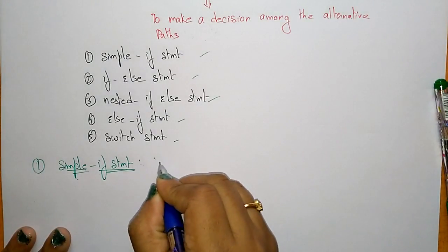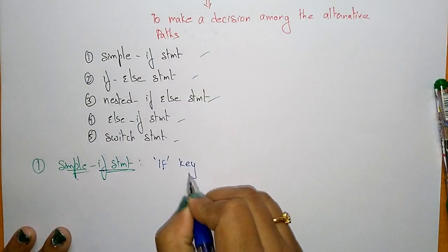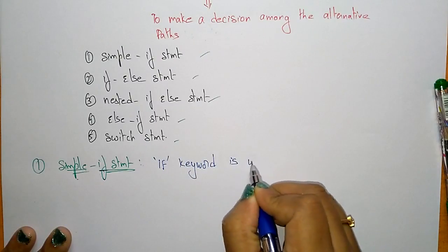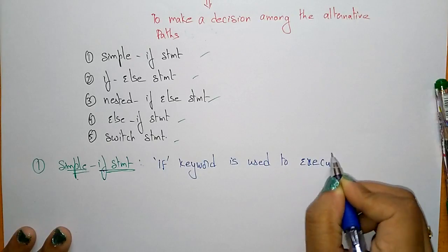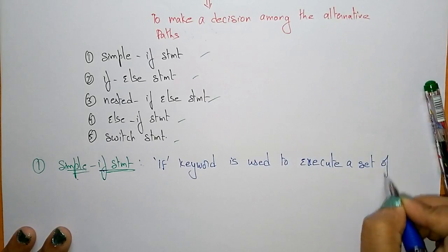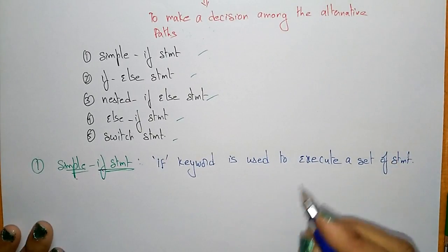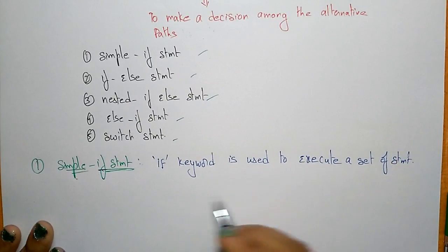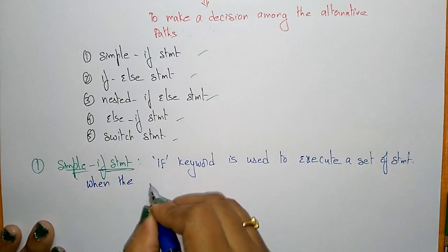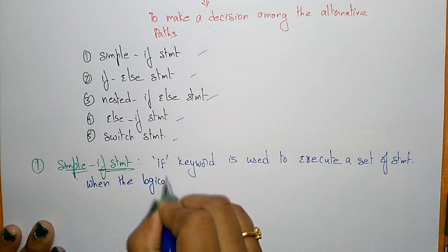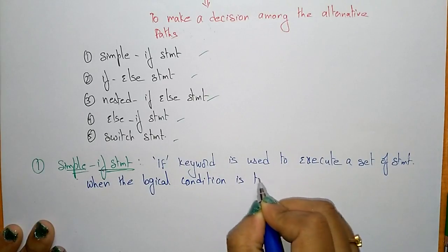Coming to the if statement: 'if' is a keyword used to execute a set of statements in the program when the logical condition is true. Whenever the condition is true, only then does it execute the set of statements in the program.